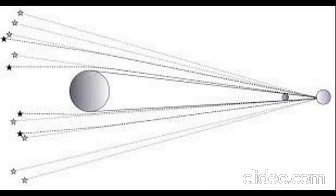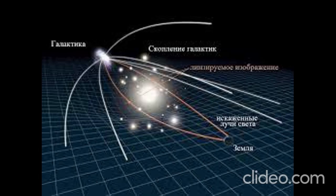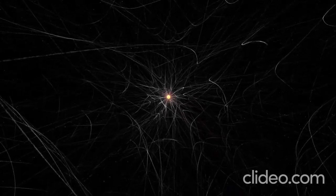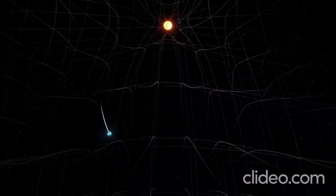Einstein showed us this: mass and energy curve space-time. If gravity bends light, then it also bends time.